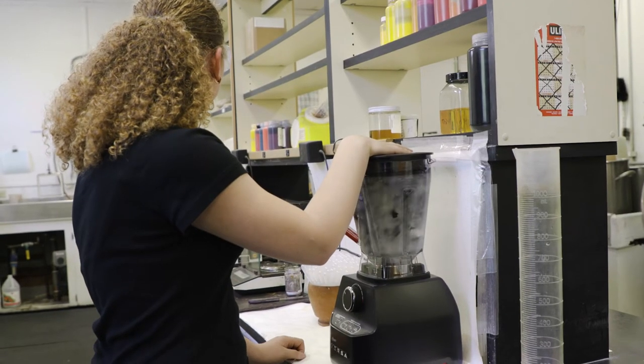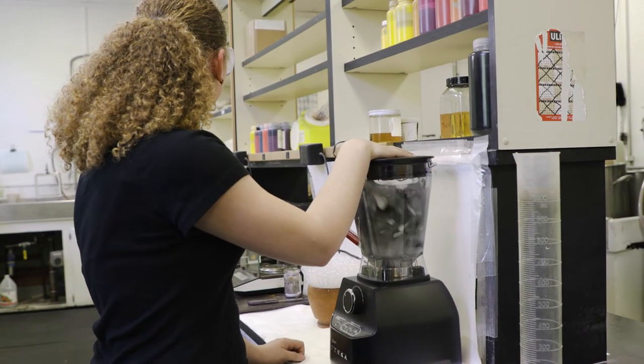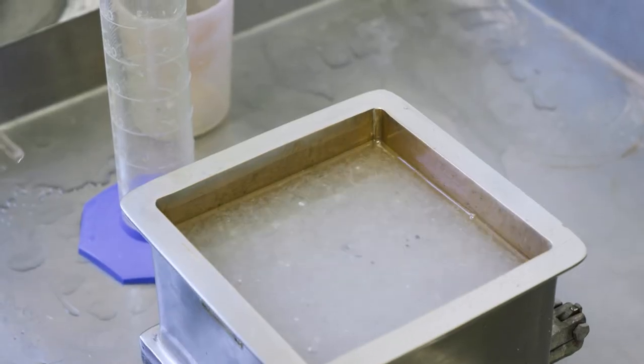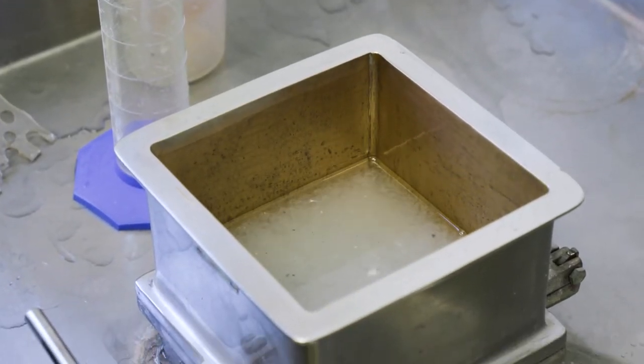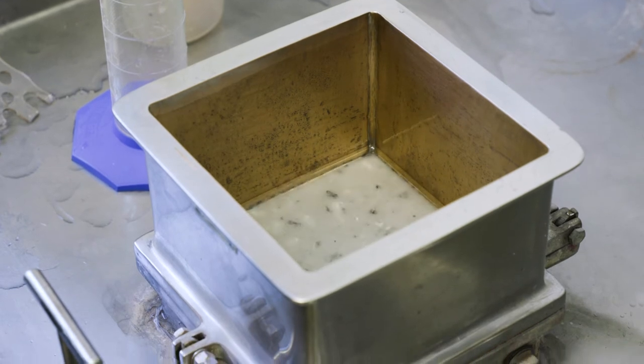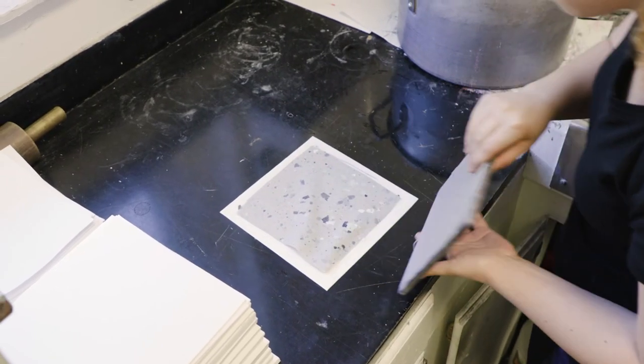The prototyping process begins by creating a pulp with water, dye, and torn pieces of recycled paper. Next, the mixture is dried, turning it into a decorative paper that's embedded with the look and texture of recycled scraps.